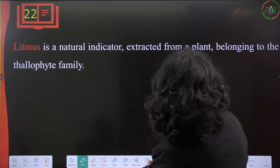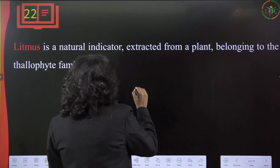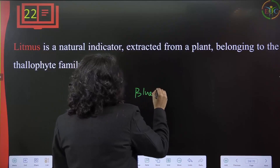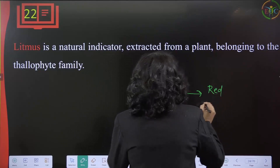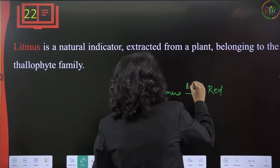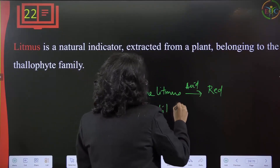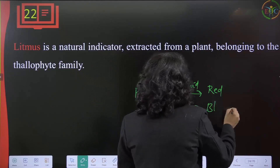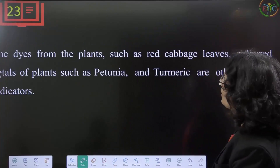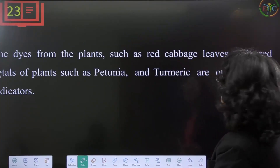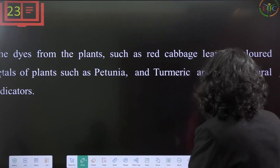Litmus is a natural indicator extracted from a plant belonging to the thallophyte family. When blue litmus changes to red, the substance is an acid. When red litmus changes to blue, the substance is a base. Dyes from plants such as red cabbage leaves, colored petals of plants like petunia, and turmeric are other natural indicators.